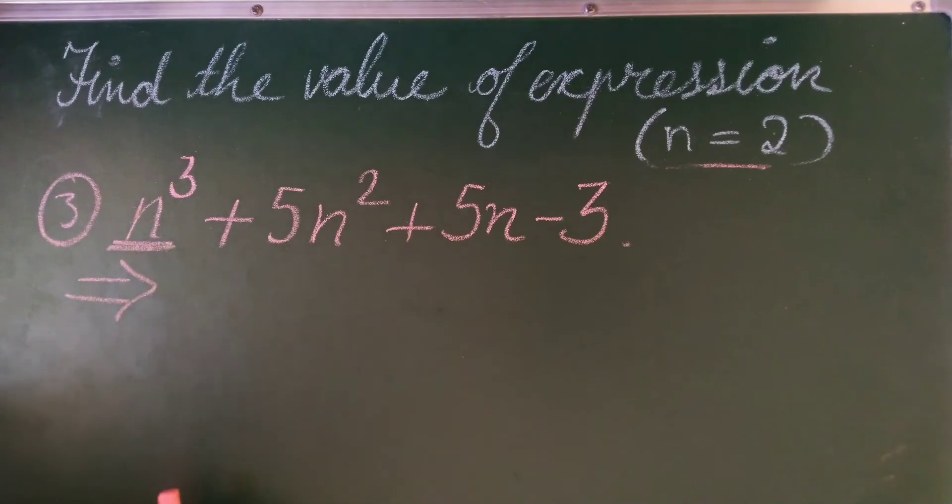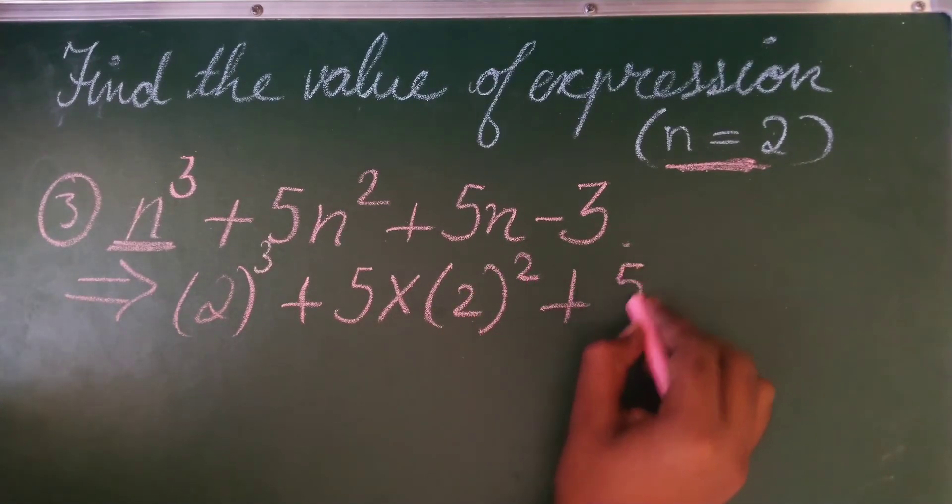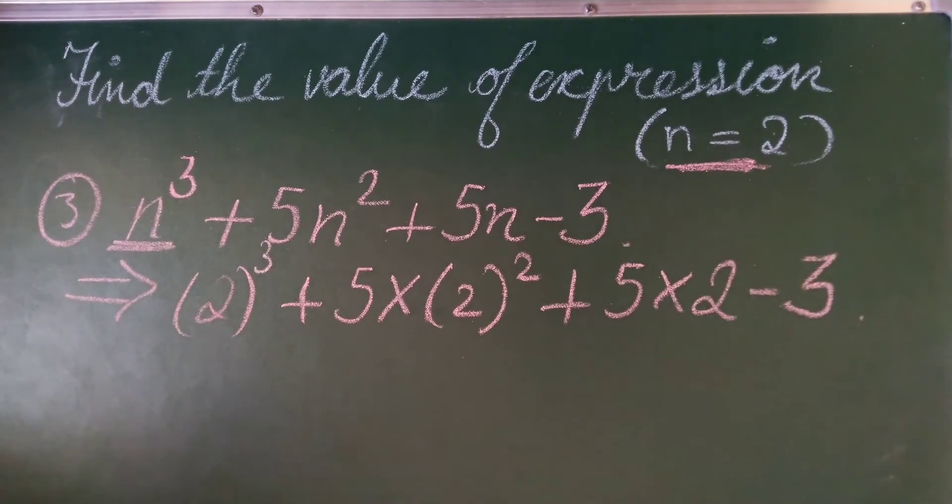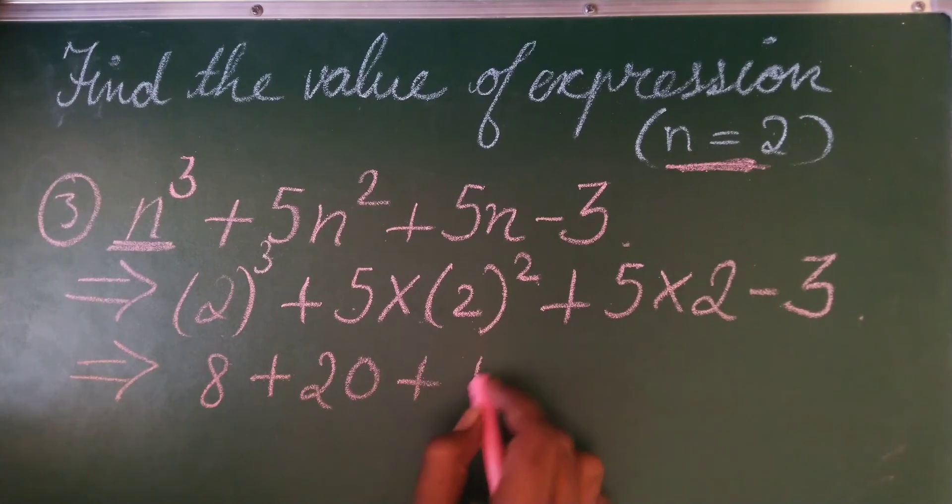You have to place 2, so it becomes 2 cubed plus 5 into 2 squared plus 5 into 2 minus 3. So what is 2 cubed? That is 8 plus 5 into 2 squared is 4. 4 into 5 is 20 plus 5 times 2 is 10, 10 minus 3.